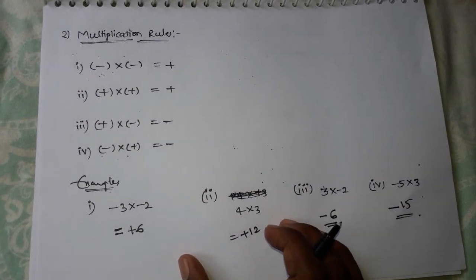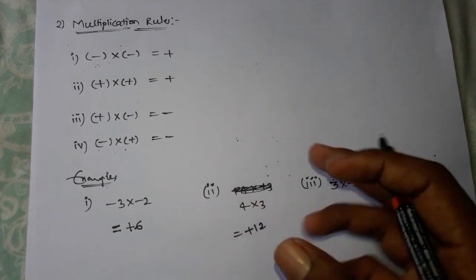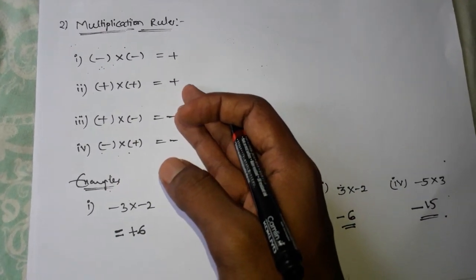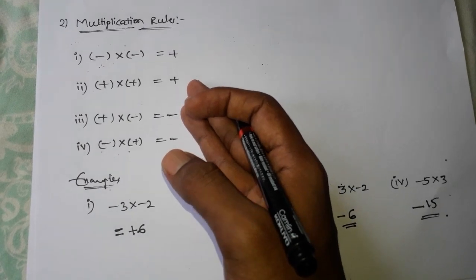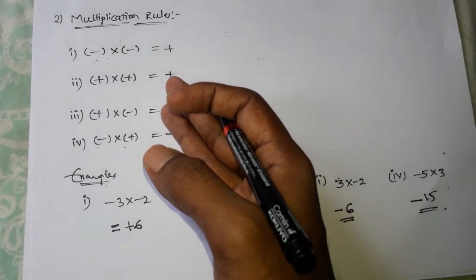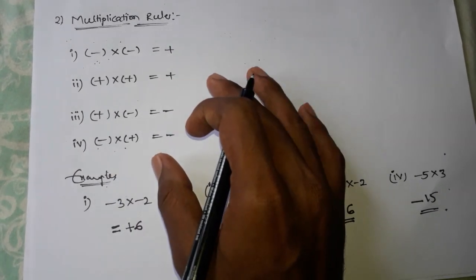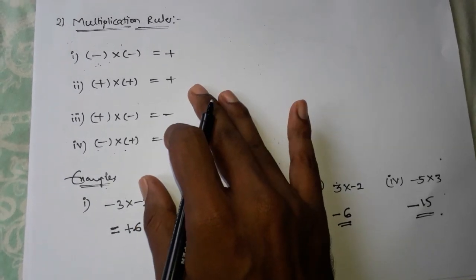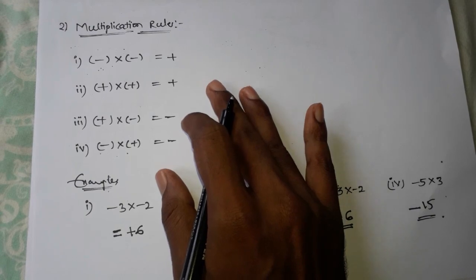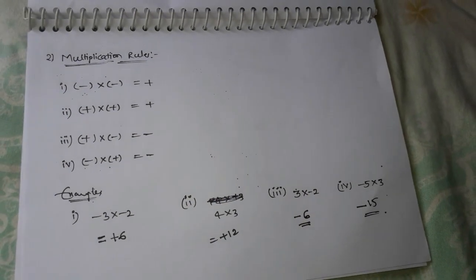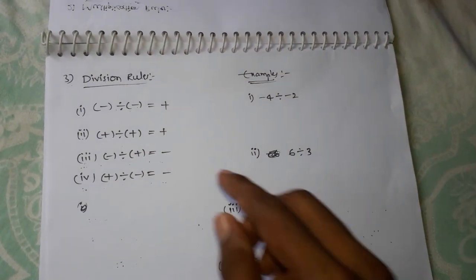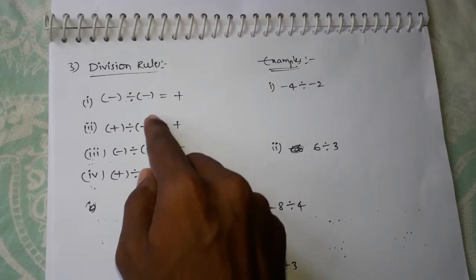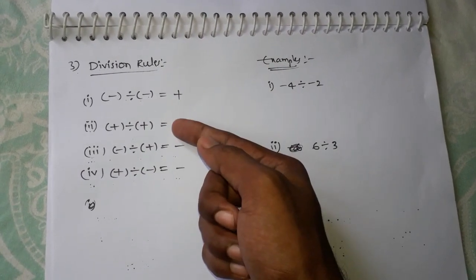These rules are very important. Third: division rules. Division rules are the same as multiplication rules.